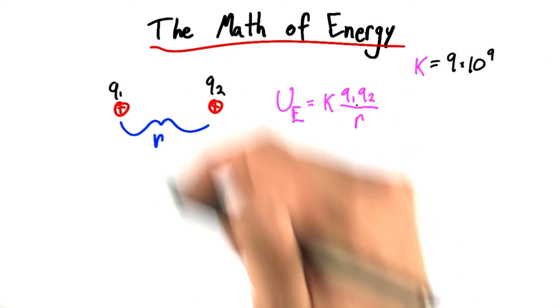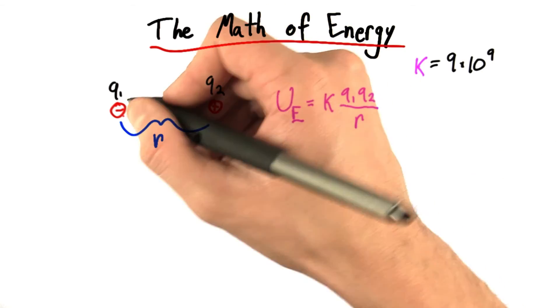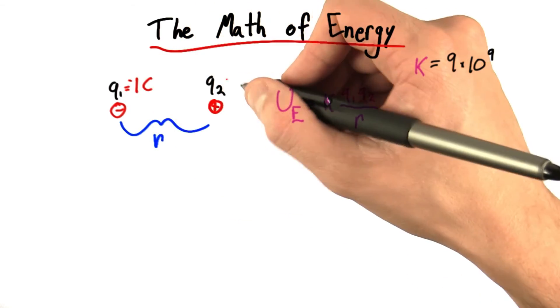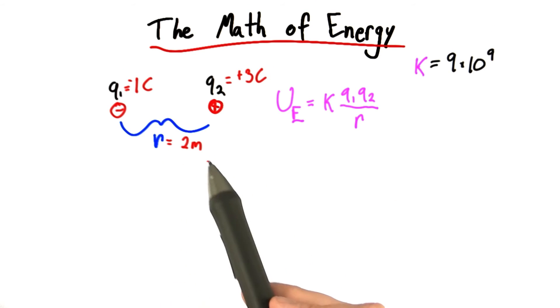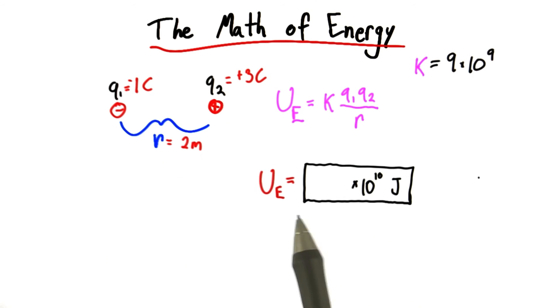So let's do some quick practice. Let's imagine that q1 is actually a minus charge of 1 coulomb, negative 1 coulomb, and q2 was a positive charge of 3 coulombs. And let's say the separation between them was 2 meters. So I want you to tell me the potential energy.